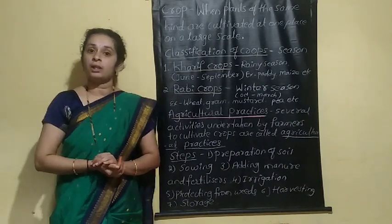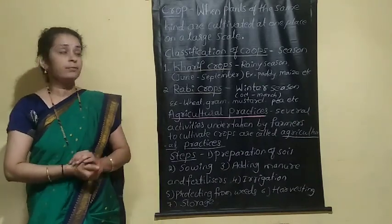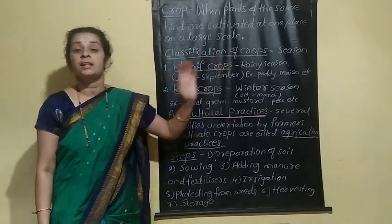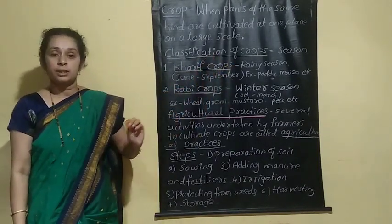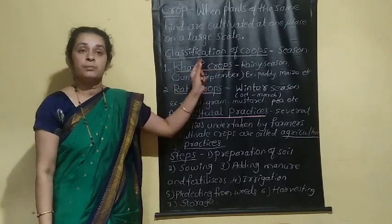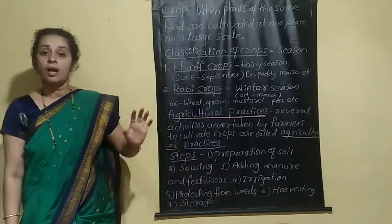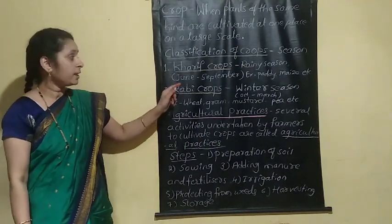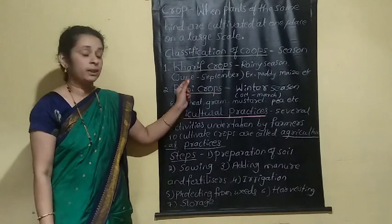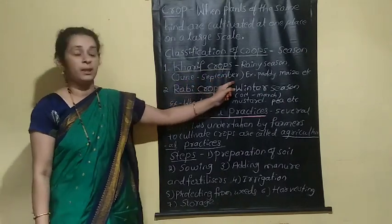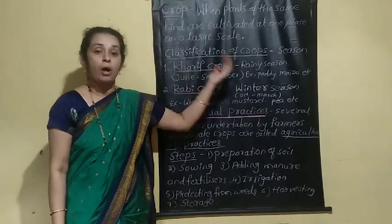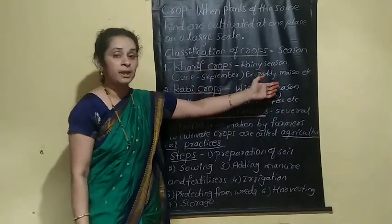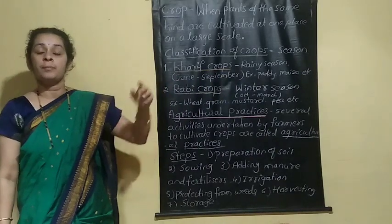Kharif crops are the crops which are grown in the rainy season. In India, the rainy season is June to September. Examples of kharif crops are paddy, maize, groundnut, soybean, etc.